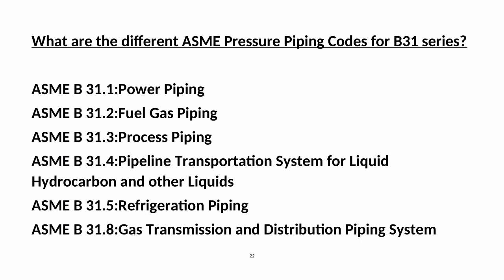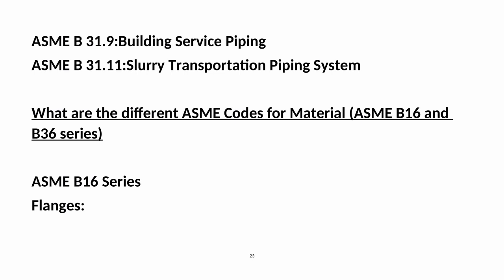What are the different ASME Pressure Piping Codes for the B31 Series? ASME B31.1 — Power Piping; ASME B31.2 — Fuel Gas Piping; ASME B31.3 — Process Piping; ASME B31.4 — Pipeline Transportation System for Liquid Hydrocarbon and Other Liquids; ASME B31.5 — Refrigeration Piping; ASME B31.8 — Gas Transmission and Distribution Piping System; ASME B31.9 — Building Service Piping; ASME B31.11 — Slurry Transportation Piping System.